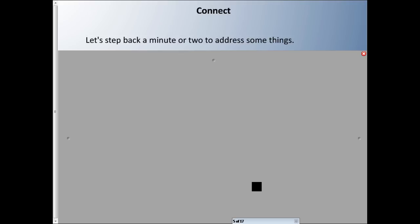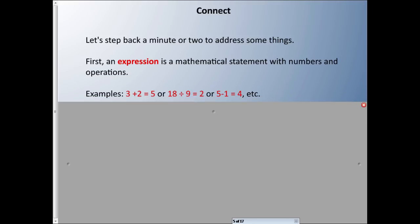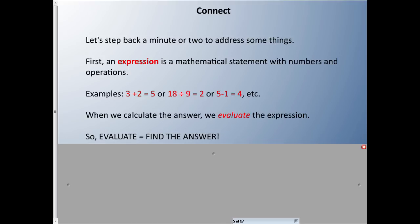Let's address a couple of things. First, an expression is a mathematical statement with numbers and operations. Examples: 3 + 2 = 5, or 18 ÷ 9 = 2, or 5 − 1 = 4 — you can think of almost a bajillion of these. When we find the answer, when we calculate the answer, it's called evaluating the expression. The mathematical term 'evaluate' is the same as just finding the answer.